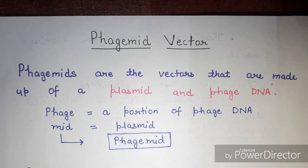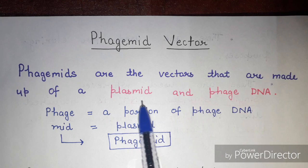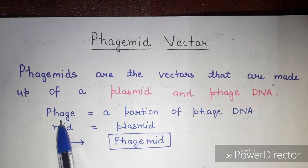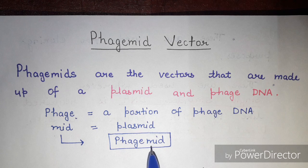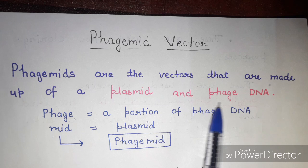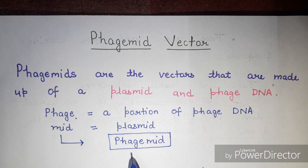Hello friends, welcome to my channel all about biology. Today we will discuss phagemid vectors. Phagemids are vectors made up of a plasmid and a phage DNA. They are called phagemids — 'phage' because they consist of DNA from a bacteriophage, and 'mid' for the plasmid. Phagemids are combinations of plasmid and bacteriophage DNA.